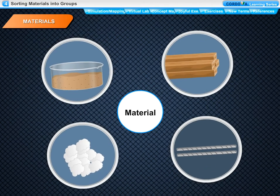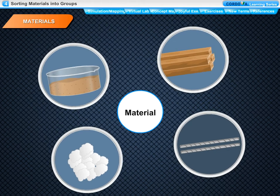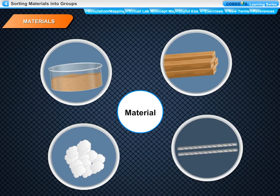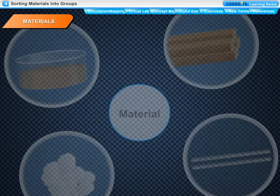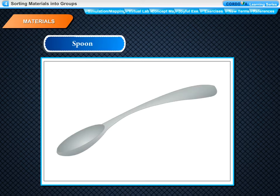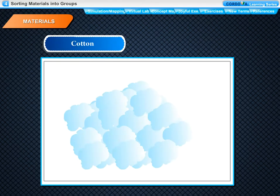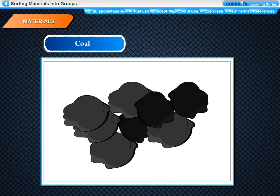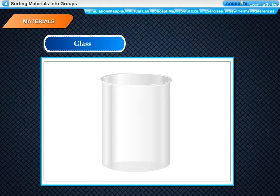A substance or thing which is used in the making of different objects is called a material. All objects are made of one or more kinds of material. For example, a chair is made of wood, so wood is a material. A spoon is made of steel, so steel is a material. Some more examples of materials are cotton, silk, coal, iron, plastic and glass.